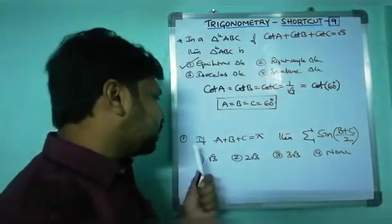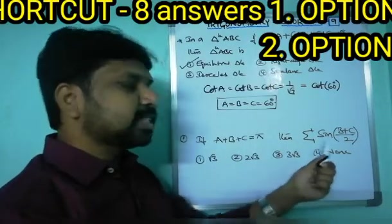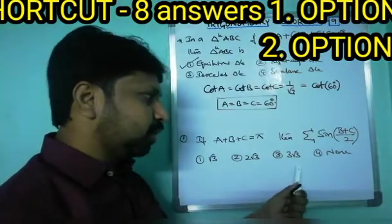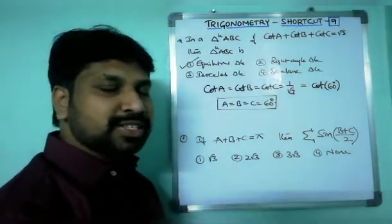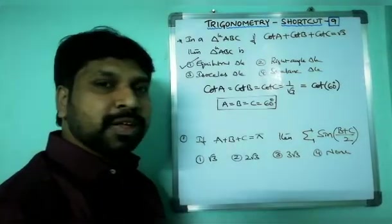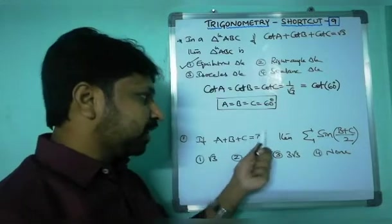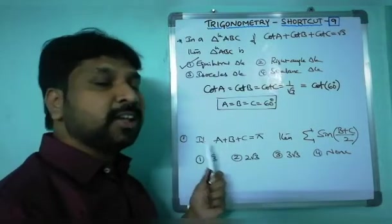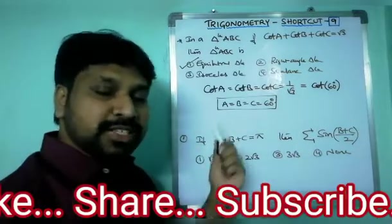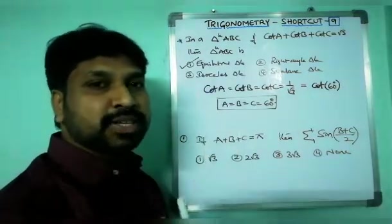Coming to the next question: if a + b + c = π, then what is sigma sin((b+c)/2)? The options are √3, 2√3, 3√3, or none of these. This is your work — please solve this by using the sharing technique. You know how to share π among a, b, and c. Share the angle, substitute, and simplify, then post your answer in the comment box.